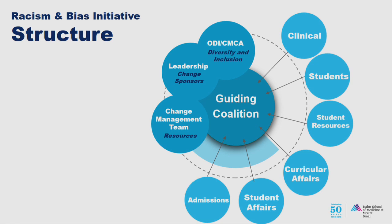The guiding coalition is made up of diverse groups of people throughout the school. By a raise of hands: how many people in the room are on the guiding coalition? The guiding coalition has six spheres or functional areas we're focusing on within the school. We meet monthly and will spend a lot of time through interactive exercises to really explore how we identify what's changing, the people side, and what process we'll go through throughout the year and moving forward.